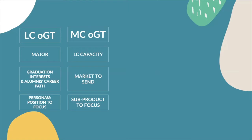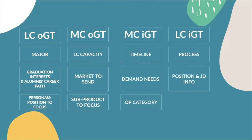For MC OGT, you can tell the overall LC capacity — the monthly applications or sign-ups they can target — and the markets, meaning the IR partners. You know which countries have demand for your product. For MC IGT, they can provide timelines, needs, or opportunity categories. After combining information from the LC level and other entity levels, you can identify the key sub-products to focus on.